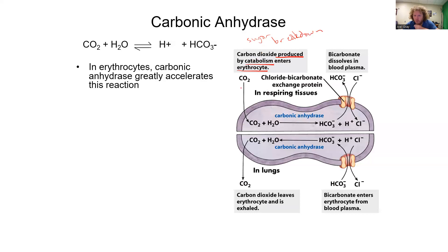That CO2 enters an erythrocyte and the enzyme carbonic anhydrase takes CO2 and H2O to produce HCO3- and H+. That HCO3- is transported out while Cl- is transported in. The purpose is that this bicarbonate dissolves in blood plasma and can enter the bloodstream.